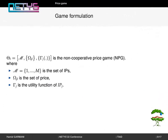Game formulation. Gamma denotes the non-cooperative price game where M is the set of infrastructure providers. Omega_gl is the set of prices and sigma_g is the utility function of infrastructure provider.